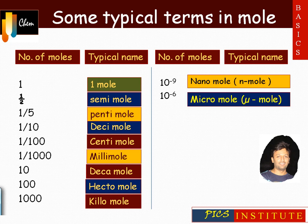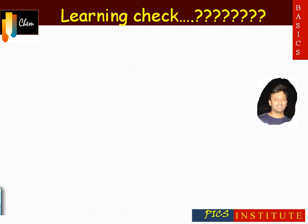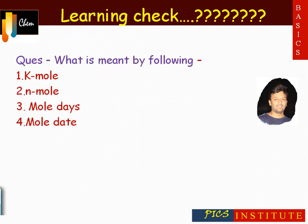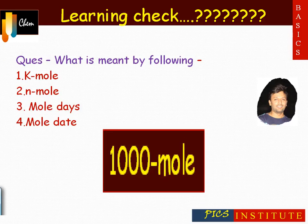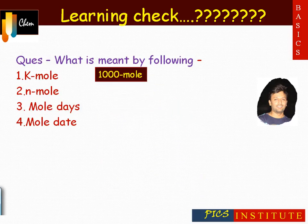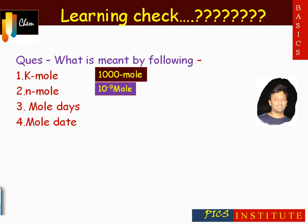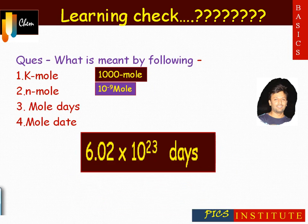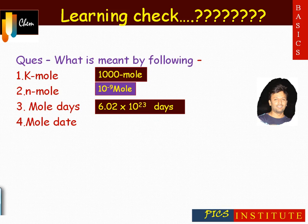For 10 raised to the power minus 6, we use the term micro-mole or mu-mole. Now let's understand the following question: what is meant by kmole, nmole, mole days, and mole date? Kmole means kilo-mole, that is 1000 moles. Nmole means nano-moles, 10 raised to the power minus 9 moles. Mole days means Avogadro's number of days, and mole date is 23rd October of every year.